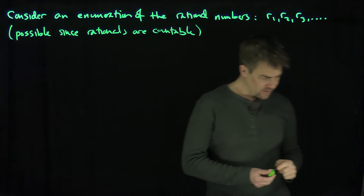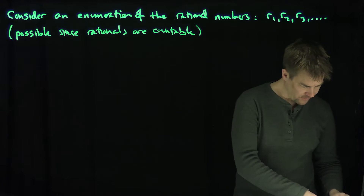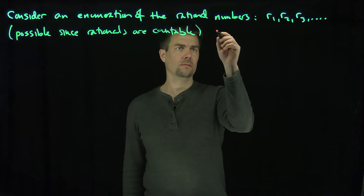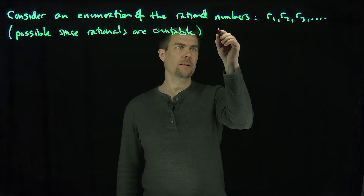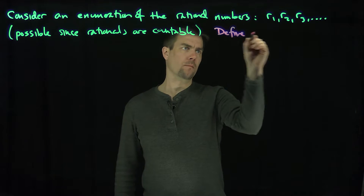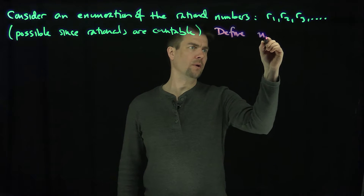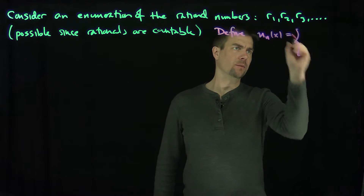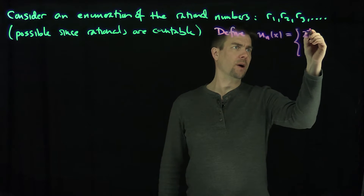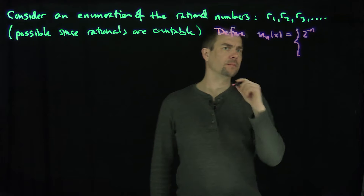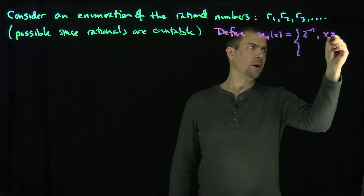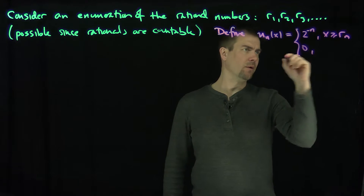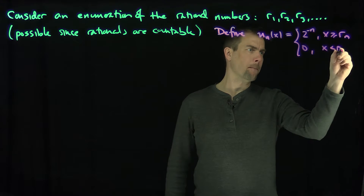What we're going to do is define some functions. Define u_n of x to be equal to 2 to the power of negative n if x is greater than or equal to r_n, and 0 if x is strictly less than r_n.